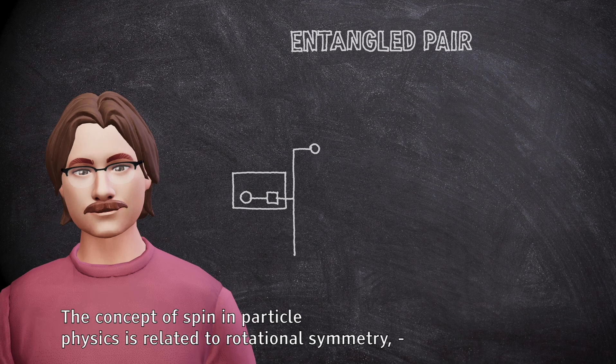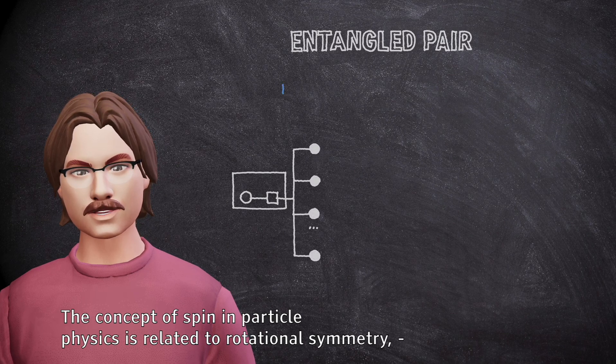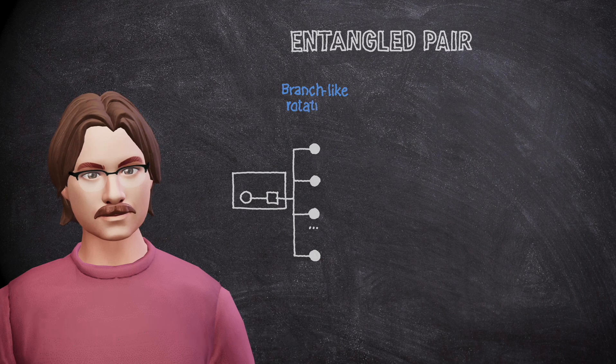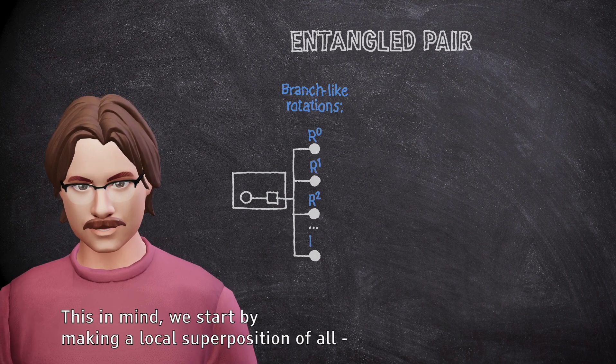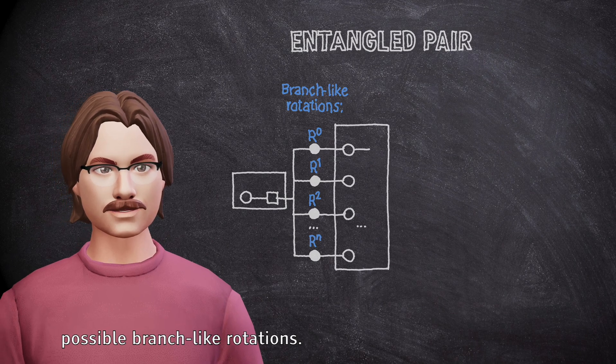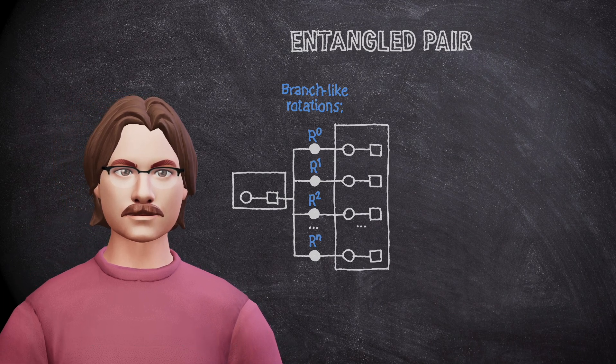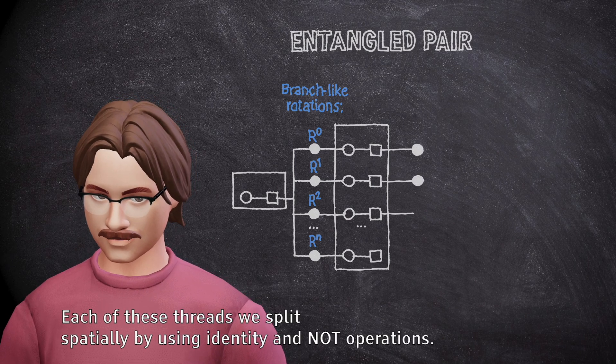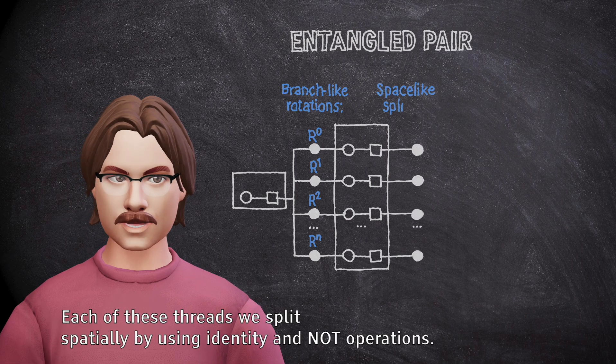The concept of spin in particle physics is related to rotational symmetry, but the rotations are not space-like. This in mind, we start by making a local superposition of all possible branch-like rotations. Each of these threads we split spatially by using identity and not operations.